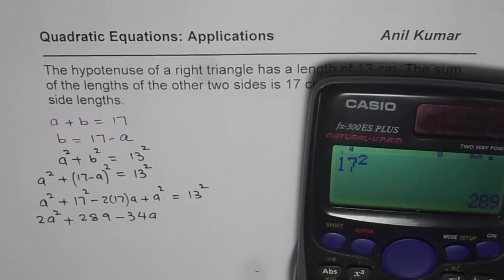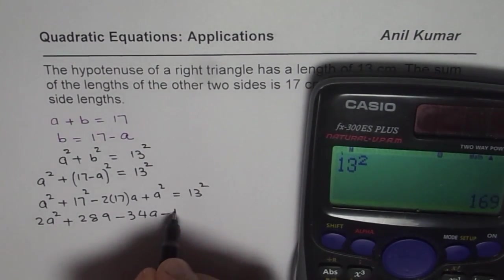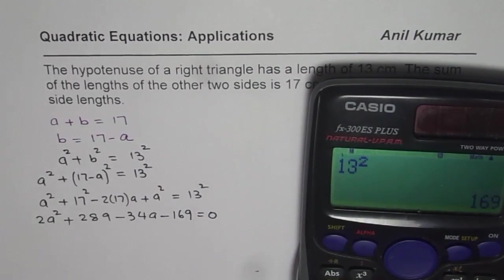So let me write 289 - 2 times 17 is 34A. We will bring 13² to the left side. So it becomes minus 13². Minus 13² will be minus 169 equals to 0.